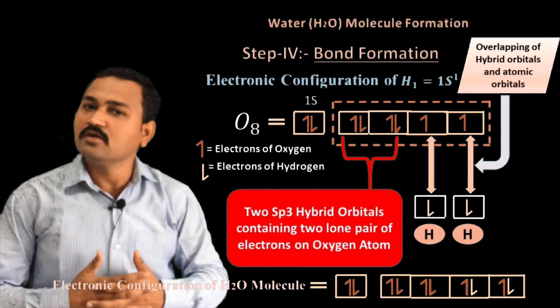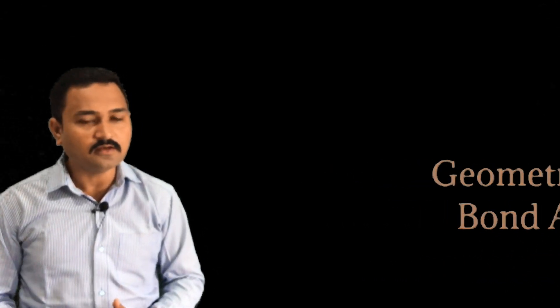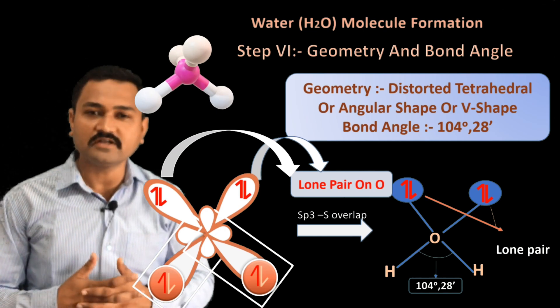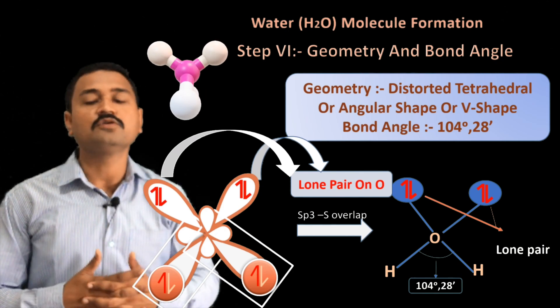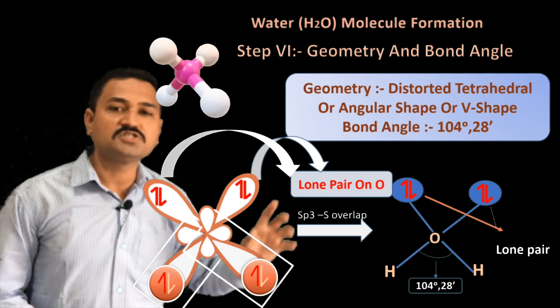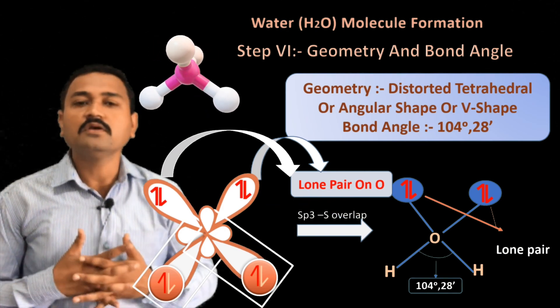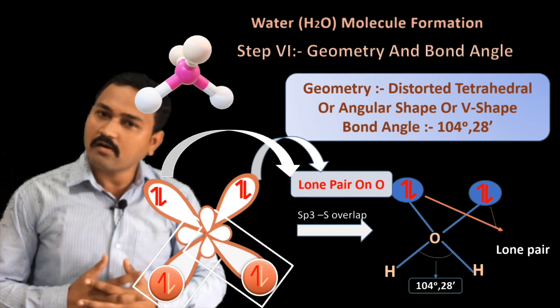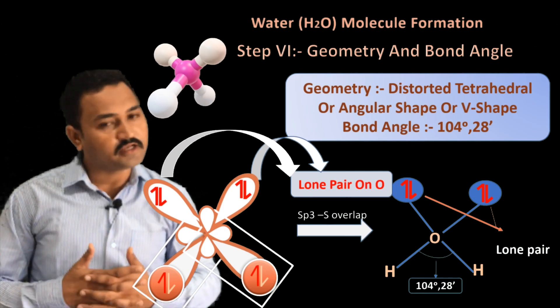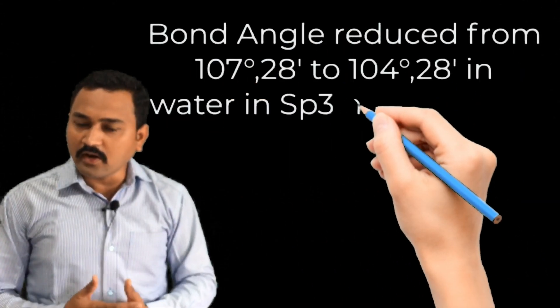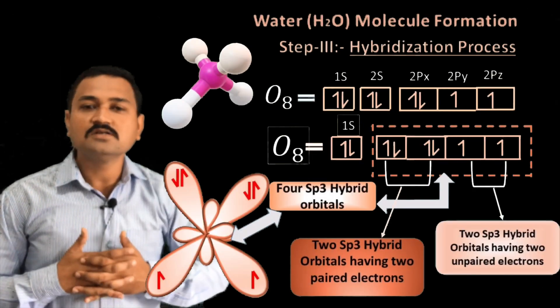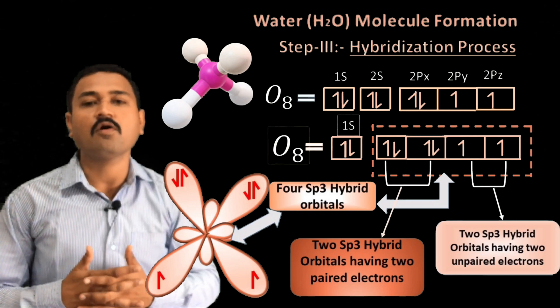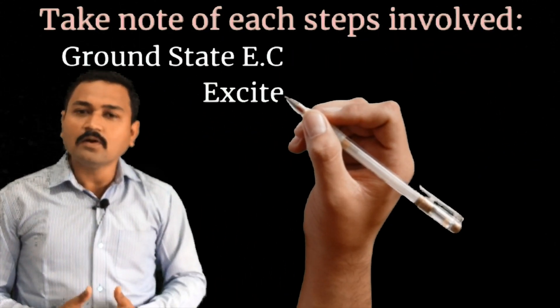The remaining two sp3 hybrid orbitals containing paired electrons remain as lone pairs on the oxygen atom in the water molecule. The water molecule shows distorted tetrahedral geometry, also called angular or V-shaped geometry, due to the presence of two lone pairs of electrons on the oxygen atom. The H–O–H bond angle is 104°28', which is reduced from the ideal tetrahedral angle due to the presence of the two lone pairs on oxygen.